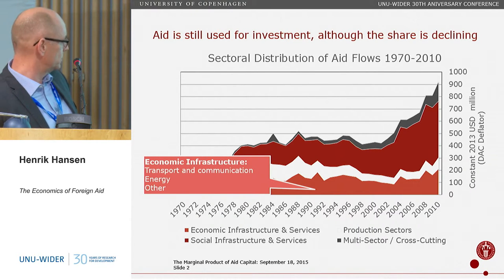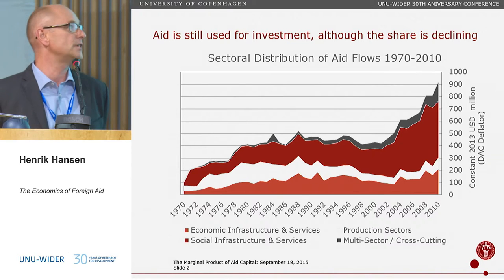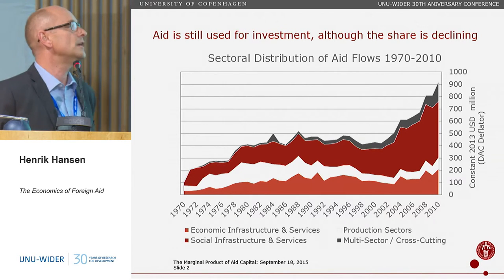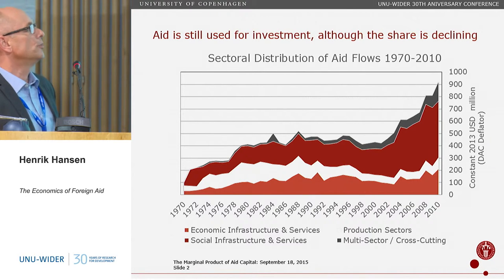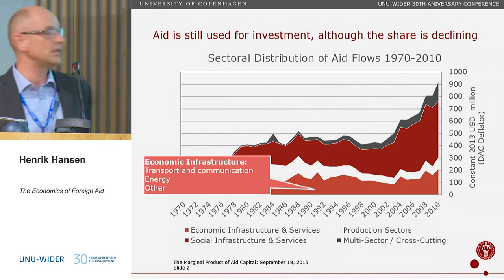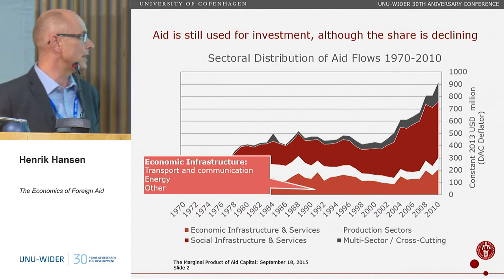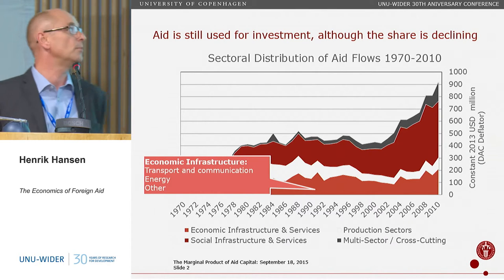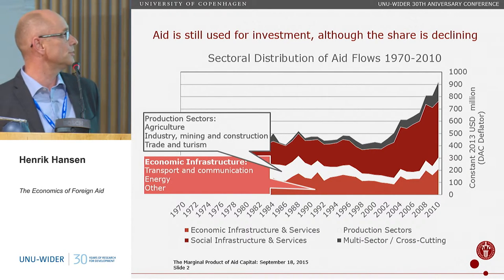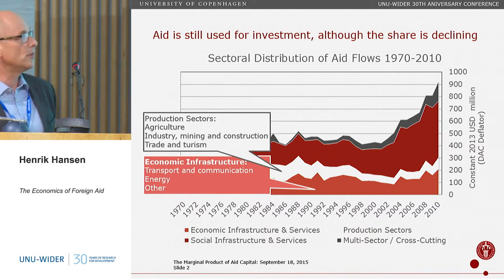Looking at some numbers: this is the sectoral distribution of aid commitments from bilateral donors from 1970 to 2010, in 2013 US dollars per hundred million dollars. We have four main sectors. The first is economic infrastructure — transport, communication, and energy — which has been discussed extensively. We also have production sectors: agriculture, industry, mining, construction, and trade and tourism. In total it's about 30 billion US dollars.